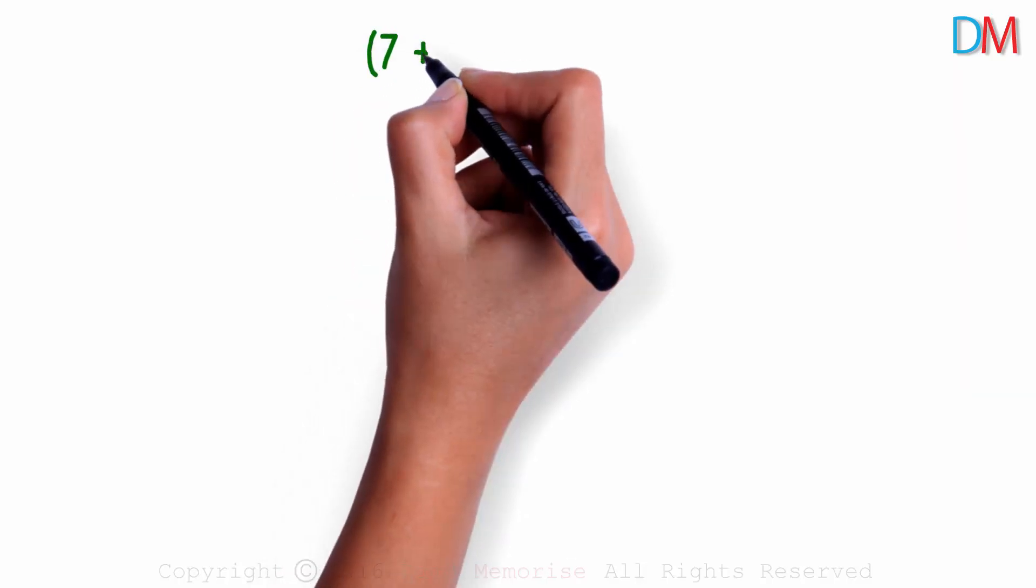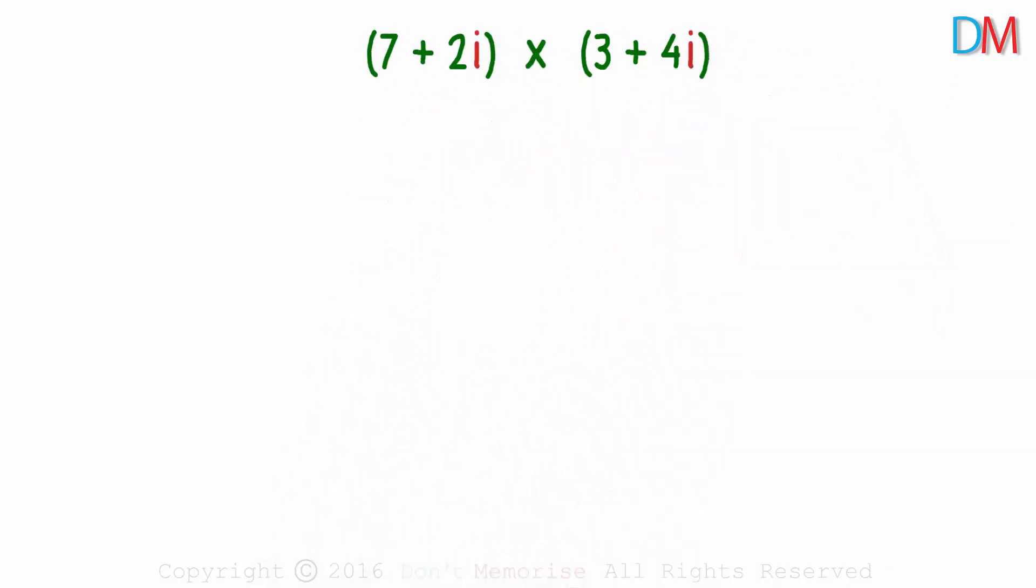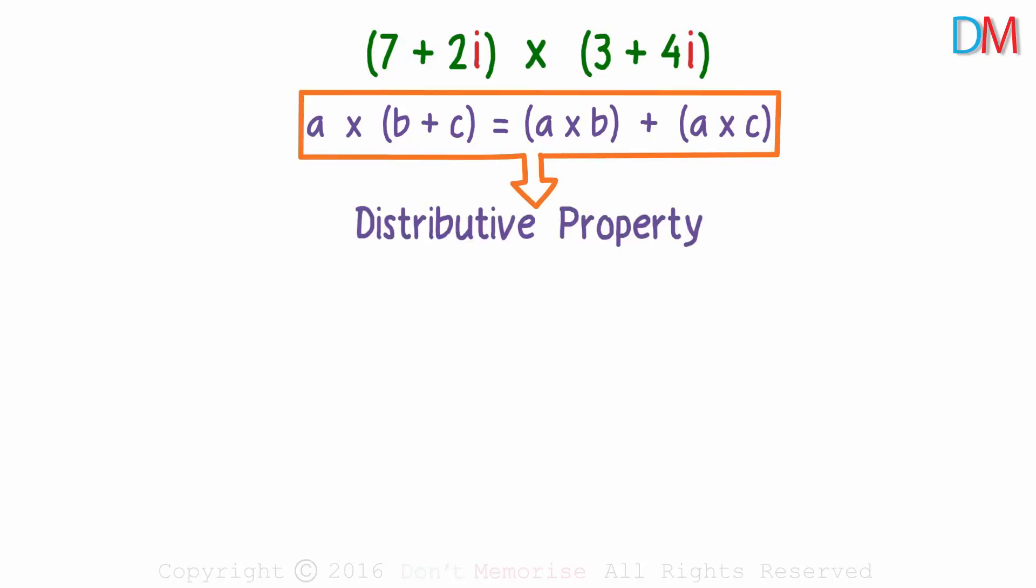Let us multiply 7 plus 2i with 3 plus 4i. We know that a times b plus c will give us a times b plus a times c. It's the distributive property.